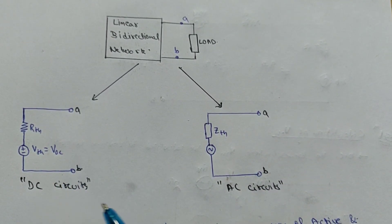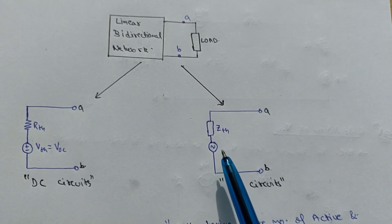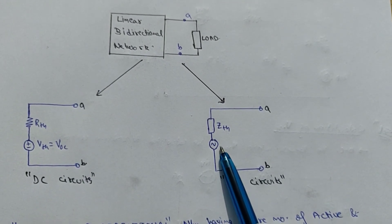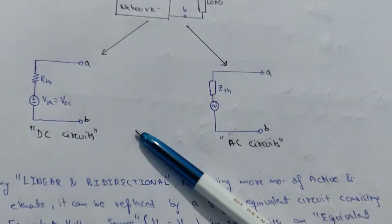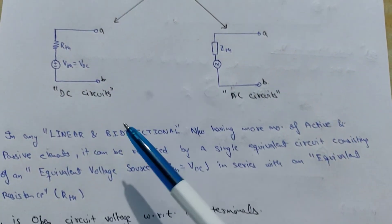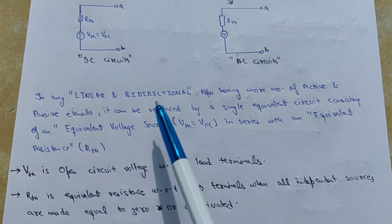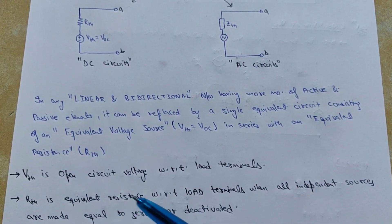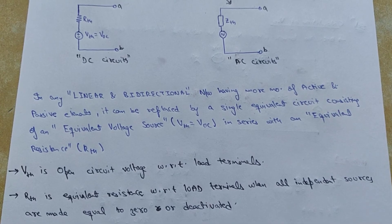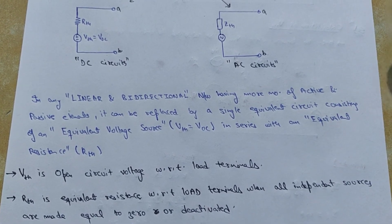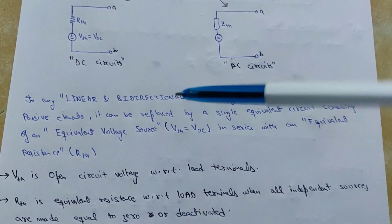In the case of DC circuits, you calculate Vth and Rth. In the case of AC circuits, you calculate Vth in AC form and Zth. The basic definition of Thevenin theorem is this — in any linear network, you can pause the video and read this; it is self-understood after reading it.